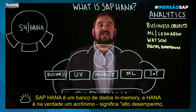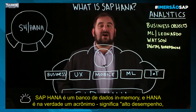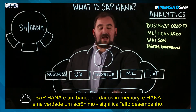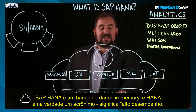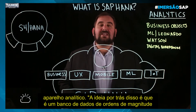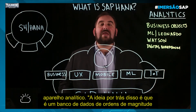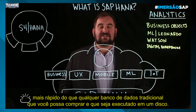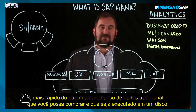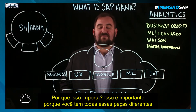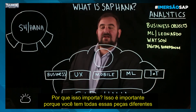SAP HANA is an in-memory database. HANA is actually an acronym — it stands for High Performance Analytical Appliance. The idea behind it is that it's a database that is orders of magnitude faster than any traditional database that runs on a disk.